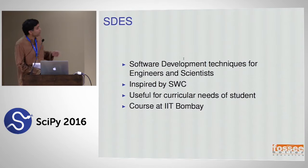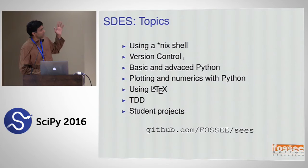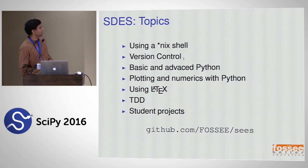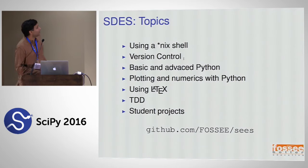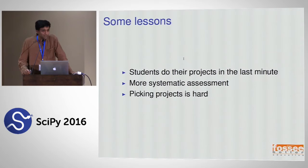The reference text is Anthony and Katie's book. It's useful for the curricular needs of a student and actually runs at IIT Bombay — I'm teaching it next semester with two other instructors. The course covers: Unix shell, version control, basic and advanced Python, plotting and numerics with Python, using LaTeX, and test-driven development at least at a basic common-sense level. Students then take on projects to apply what they've learned. It's called SDES — Software Development Techniques for Engineers and Scientists — and it's on GitHub.